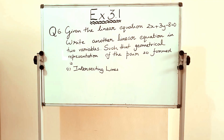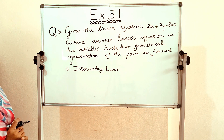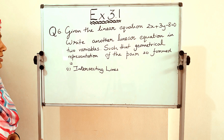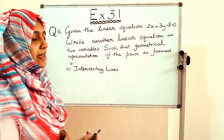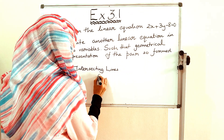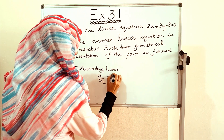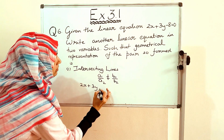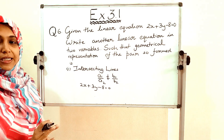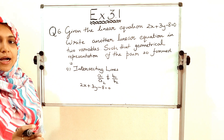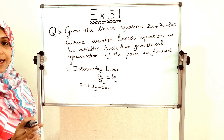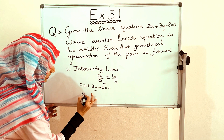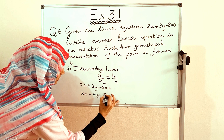This is our answer. Next is question number 6. Given the linear equation 2x + 3y − 8 = 0, write another linear equation in two variables such that the geometrical representation of the pair is: first case, intersecting lines. The condition for intersecting lines is a1/a2 ≠ b1/b2. So let us write the next equation as 3x + 4y − 5 = 0.